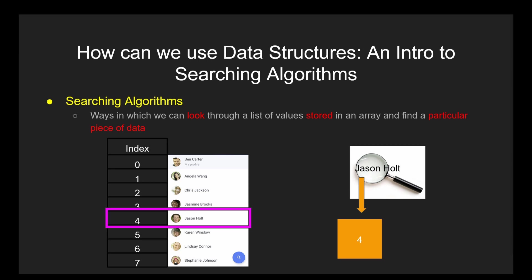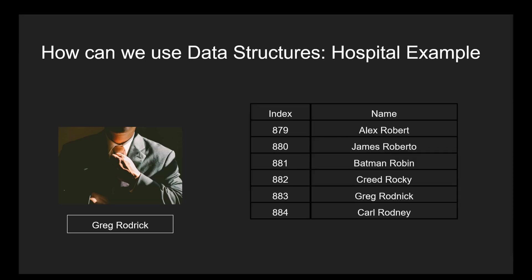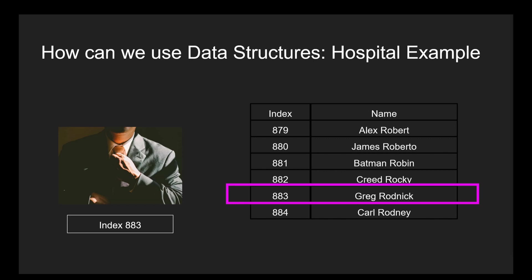Typically, searching algorithms are used to return the index of a particular data point so that it can be used, modified, updated, or checked on. For example, if you are about to check into a hospital run on an array system for patients, the staff must search for your name in the database, and by returning the index of where your name is, they now have a quantifiable number that they can use to easily check you in, rent out prescriptions, schedule your checkups, update your personal information, etc. without having to search through the list for your name every time.